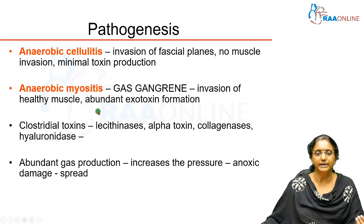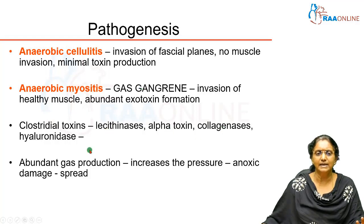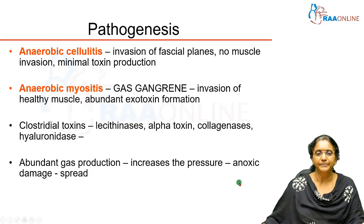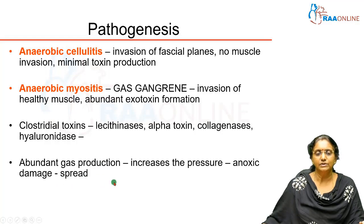Anaerobic myositis is the actual gas gangrene, where healthy muscle tissue is invaded and abundant exotoxin formation is seen. The main clostridial toxins produced include lecithinases, collagenases, hyaluronidase, and most importantly the alpha toxin produced by Clostridium perfringens. Abundant gas production occurs in the tissues, increasing pressure, compressing blood vessels, increasing anoxia, and necrosing tissues.